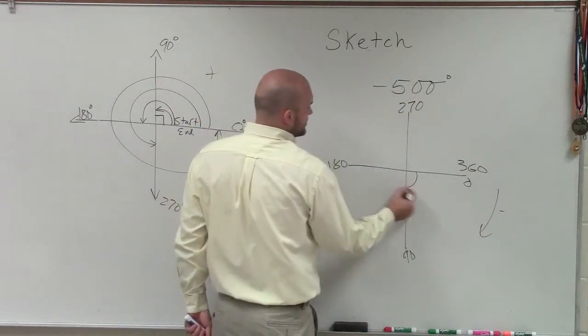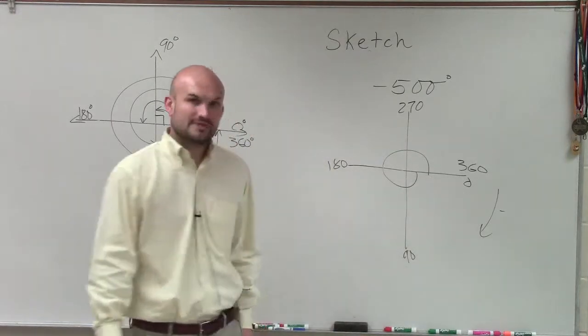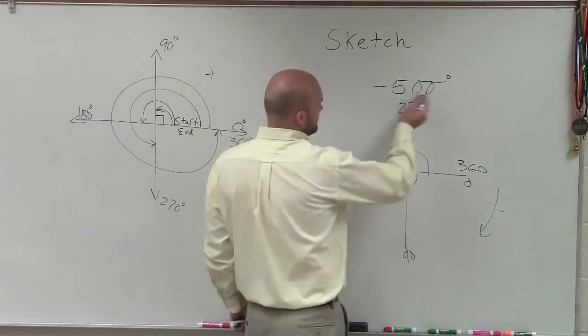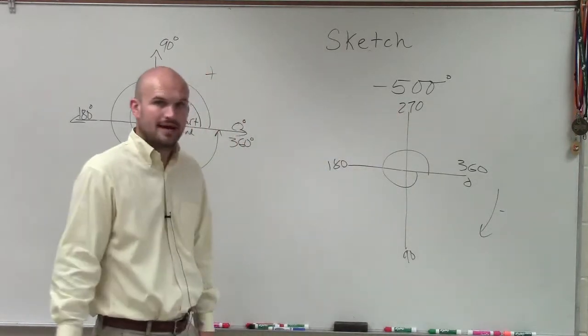So obviously, I know negative 500, so I need to go at least over to 360. Again, 360 in the negative direction. And now I just need to get as close to 500 as I possibly can, right?